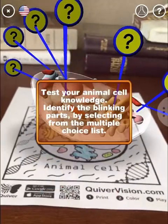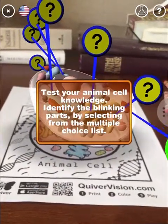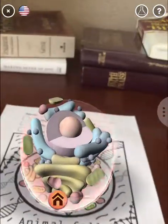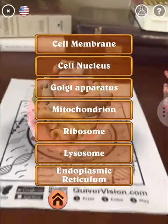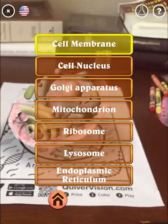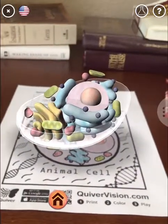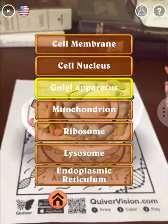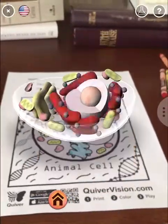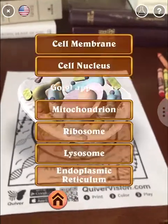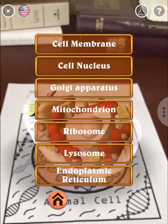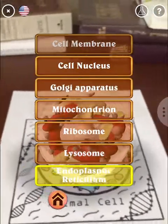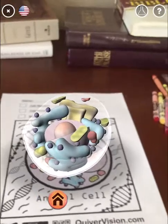Down here you've got different options. You can take a test by identifying the blinking parts and selecting from the multiple choice list. So what is that? That is the cell membrane. It tells me I'm right, and then it goes on to the next one. What is that? That is the Golgi apparatus. So kids can kind of test themselves. Let's get one wrong on purpose — it tells me I got the answer wrong. So it's a way for kids to test themselves and look at it.